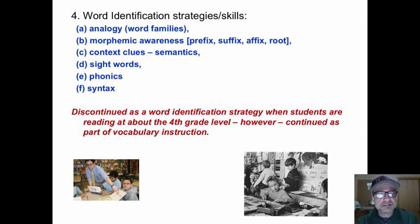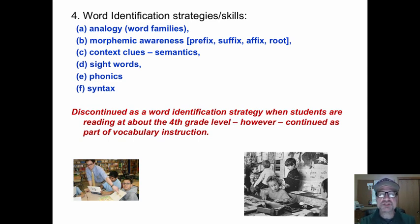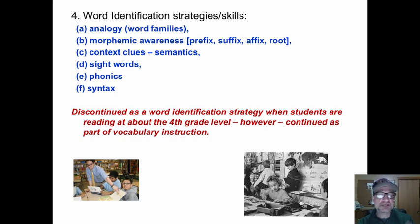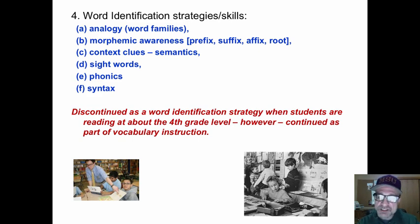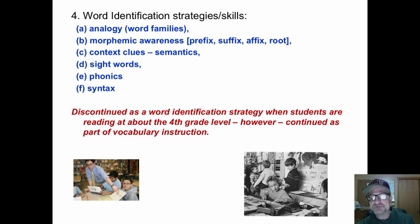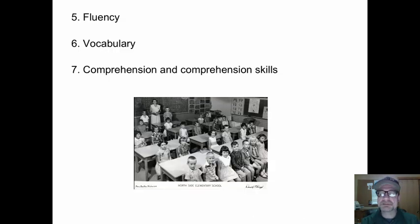The fourth part is some sort of word identification strategy, not to be confused with phonics. Phonics is one way to identify words. Analogies, morphemic awareness, context clues, sight words, phonics — one of six — and syntax. These should be discontinued as word identification strategies when students are reading at about the third or fourth grade level. However, they are continued as part of vocabulary instruction.